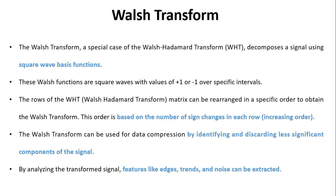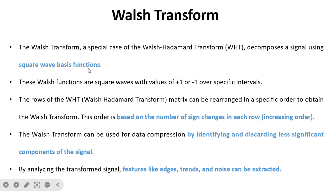The Walsh transform is a special case of the Walsh-Hadamard transform, which decomposes a signal using square wave basis functions. These Walsh functions are square waves with values of plus one or minus one over specific intervals. The rows of the Walsh-Hadamard matrix can be rearranged in a specific order to obtain the Walsh transform. This order is based on the number of sign changes in each row, that is, in increasing order.